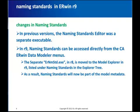In previous versions, naming and data type standards were enforced via NSM and DSM, which were separate executable files. These are now part of a model and have been replaced with naming and data type standards objects and options. The new menu for naming and data type standards can be accessed from Model Explorer. Since these are now part of a model, the metadata has also been changed accordingly to accommodate these changes.